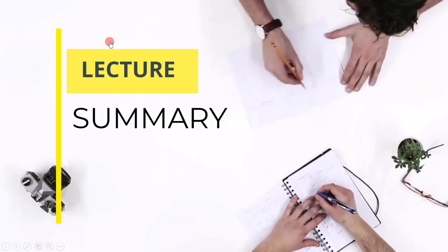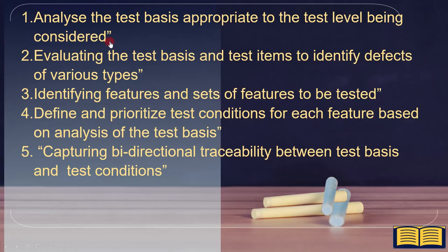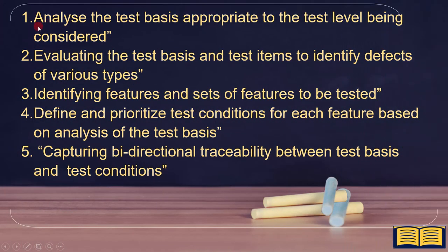Now let's summarize all the important points. The five major activities of test analysis are: first, analyze the test basis appropriate to the test level being considered; second, evaluating the test basis and test items to identify defects of various types; third, identifying features and sets of features to be tested; fourth, define and prioritize test conditions for each feature based on analysis of the test basis; and fifth, capturing bidirectional traceability between test basis and test conditions.